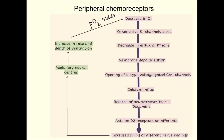To summarize: a decrease in O2 causes closure of the O2-sensitive potassium channels, leading to decreased efflux of potassium ions. Potassium ions remain inside the cell, causing membrane depolarization. While we usually associate depolarization with sodium influx, here it results from decreased efflux of potassium ions.